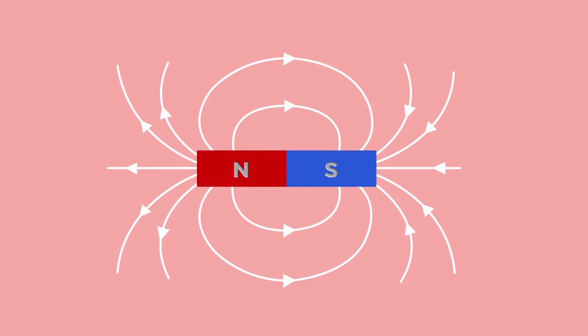Note when drawing field lines that the lines are closest at the poles. They do not touch each other. The arrow shows the direction of the force a magnetic particle will experience and runs from North to South.